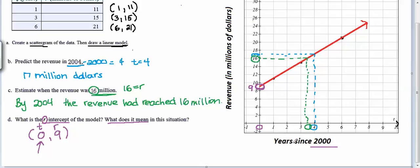So if it's been 0 years since 2000 it's the year 2000. So we can begin by saying in the year 2000. So that's the first part of our answer telling us what's happening with t. For the second part of our answer we want to tell what's happening with r. The units of r are revenue in millions of dollars so we can say revenue was 9 million dollars.